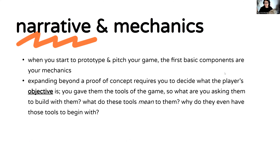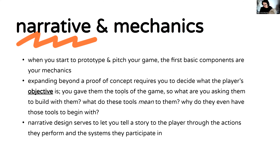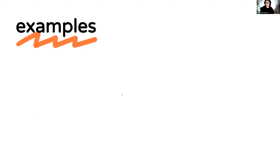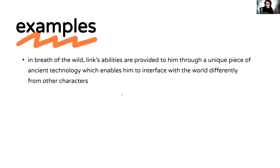Expanding beyond a concept requires deciding what the player's objective is. The mechanics are essentially the tools of the game — what are you asking them to do with them, what do those tools mean to them? Narrative essentially justifies and explains these mechanics; it gives them reason to use those tools. Narrative design serves to let you tell a story to the player through the actions they perform and the systems they participate in. Here are some examples of narrative and mechanics overlapping: in Breath of the Wild, Link's abilities are provided to him through a unique piece of ancient technology that allows him to interface with the world differently from other characters.